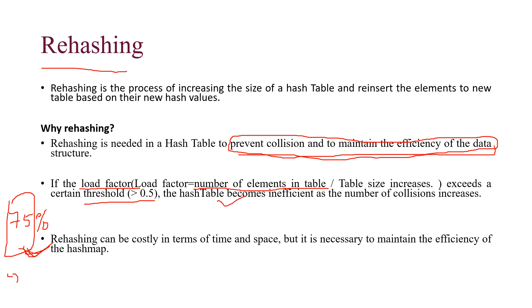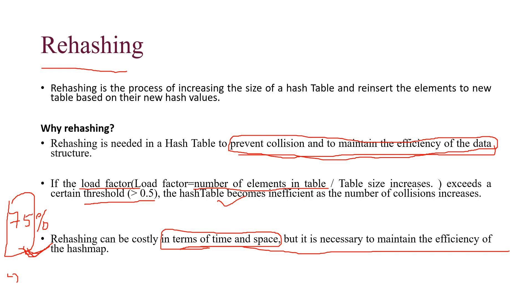Rehashing can be costly in terms of time and space, but it is necessary to maintain the efficiency of the hash map. The reason it is costly is that in rehashing we are doubling the table size, but we are not increasing the number of elements. So suppose we have a table size of 10 and some elements; after 70% of the table is filled, some elements will be unable to get a place. You will get a load factor greater than 0.5 and more collisions. In rehashing, you double the table size and calculate the index based on the new table size.